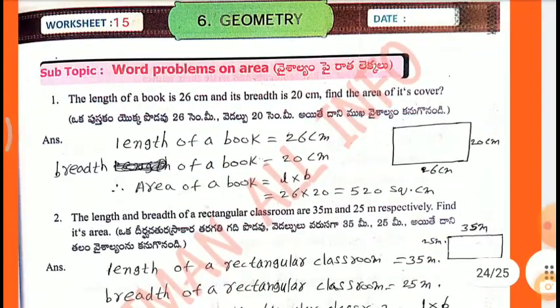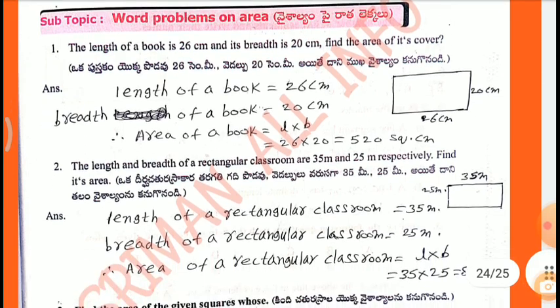Worksheet No. 15, subtopic: Word problems on area. The length of a book is 26 cm and width is 20 cm. Find the area of its cover. Answer: area equals L into B — 26 into 20 equals 520 square cm.